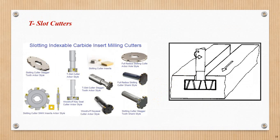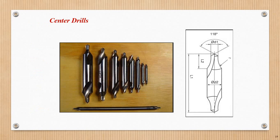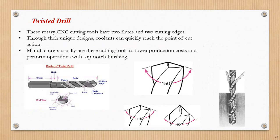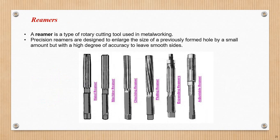Next is T-slots. We have a slot operation. If we have T-slots we will do T-slot machining. Also reamers: hand reamer, machine reamer, chucking reamer, flute reamer, and expandable reamer — which is adjustable.